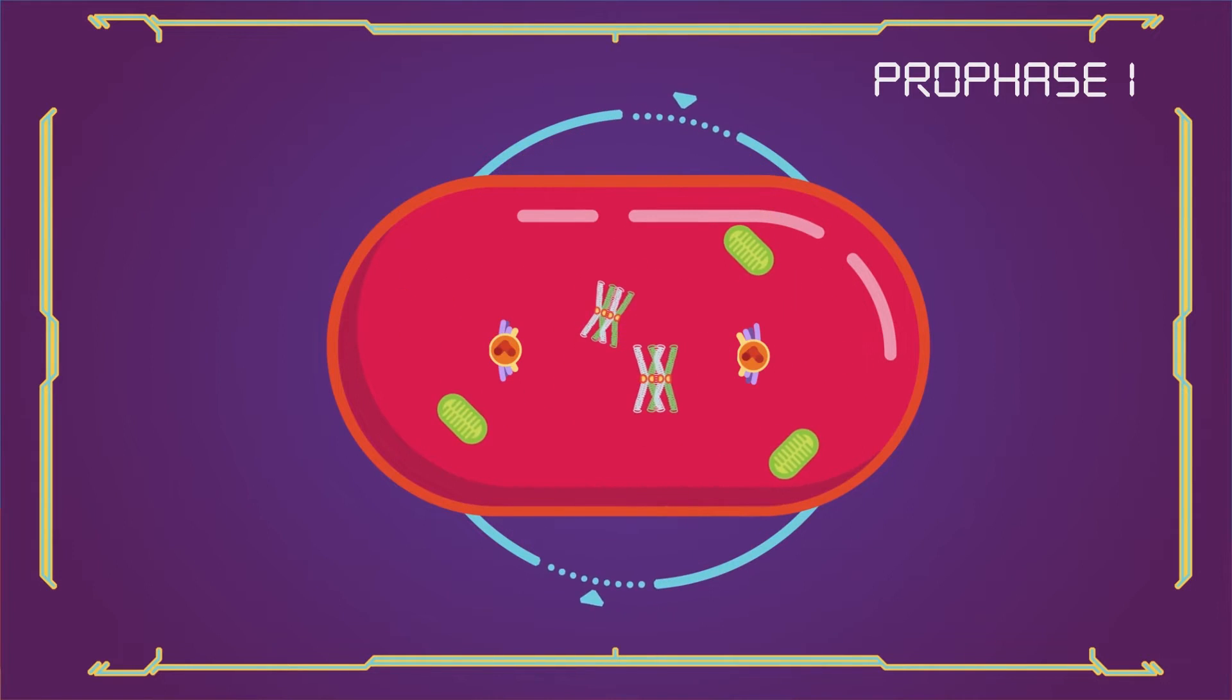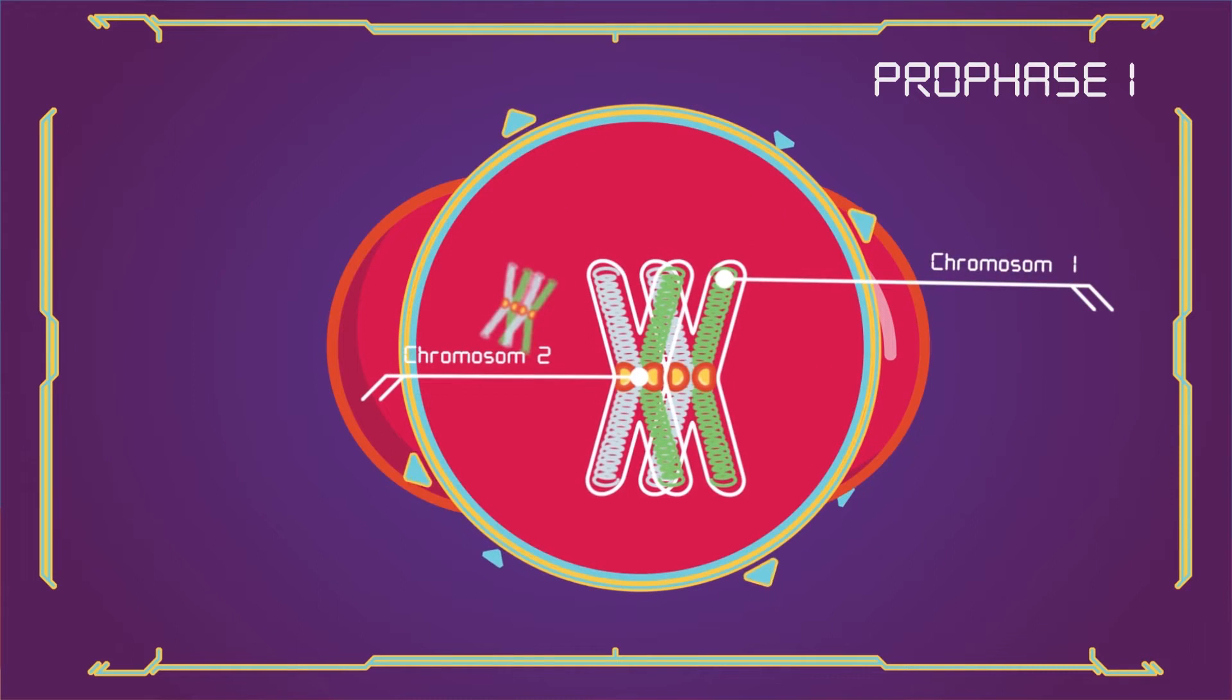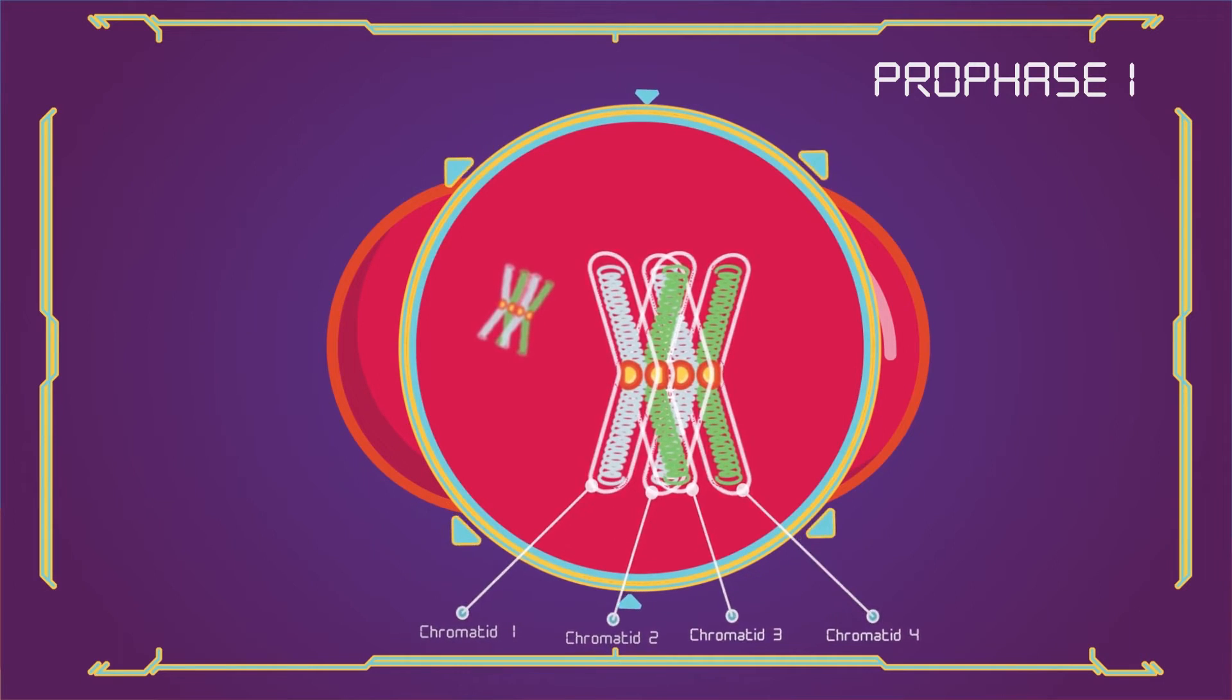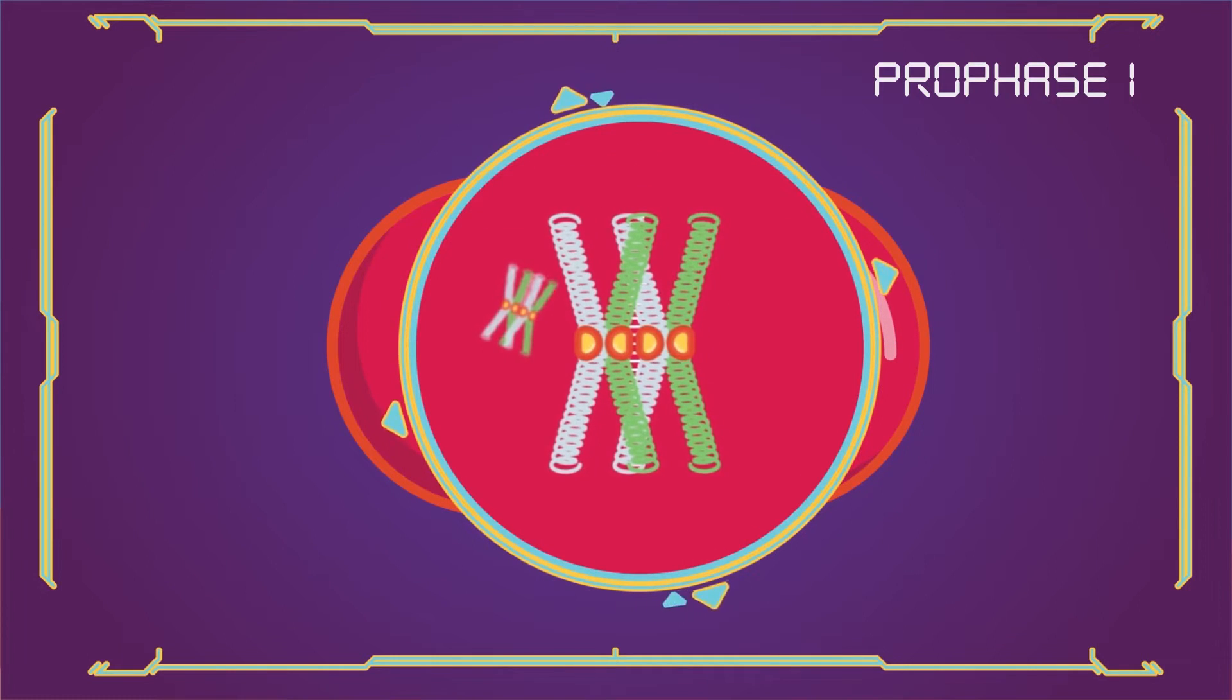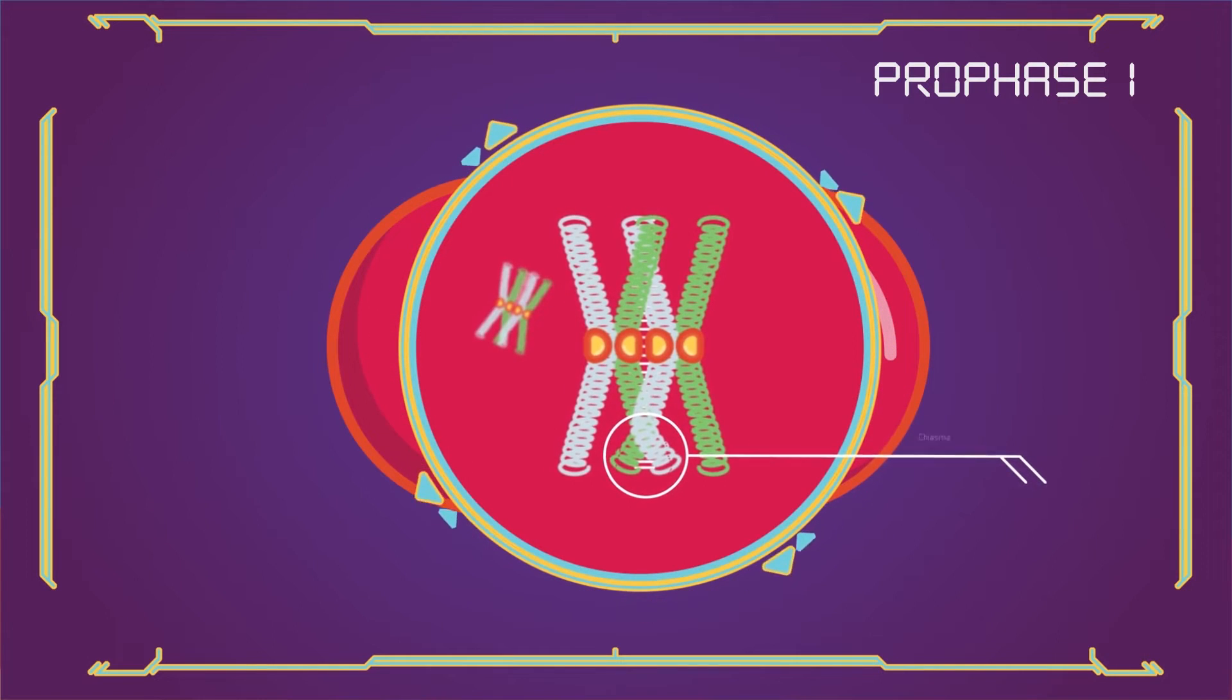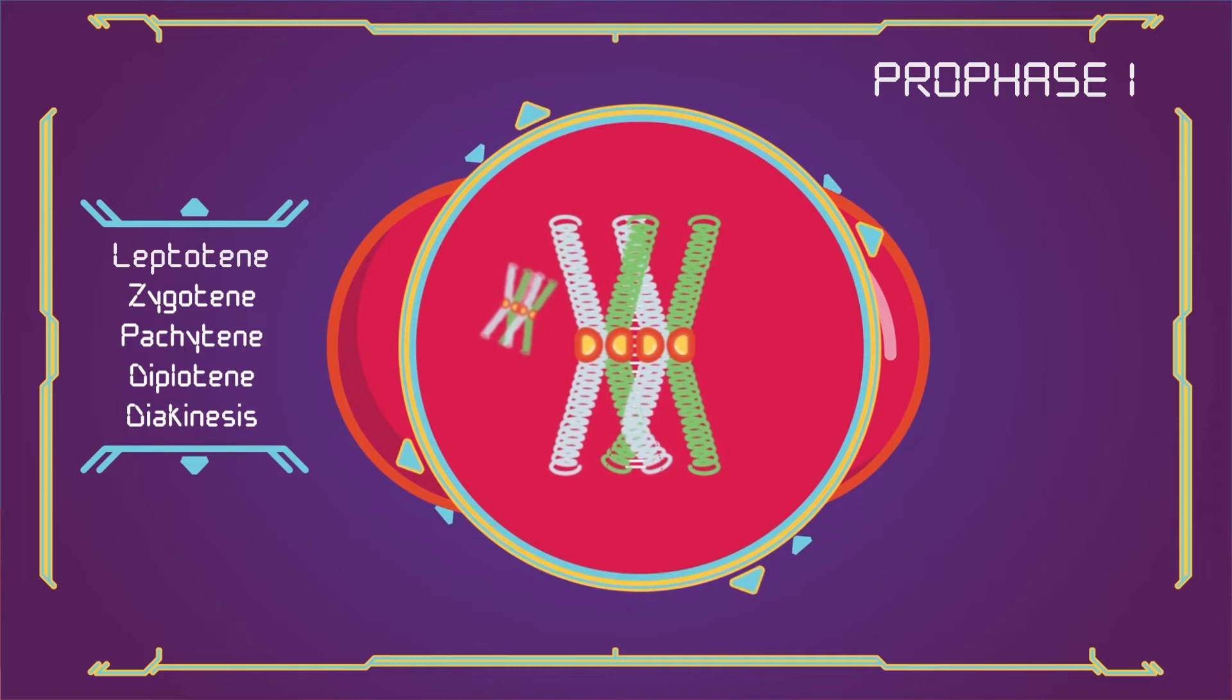The paired and replicated chromosomes are called bivalents or tetrads, which have two chromosomes and four chromatids with one chromosome coming from each parent. The process of pairing the homologous chromosomes is called synapsis. At this stage, non-sister chromatids may cross over at points called chiasmata (plural; singular: chiasma). Prophase 1 has historically been divided into a series of sub-stages, which are named according to the appearance of chromosomes.